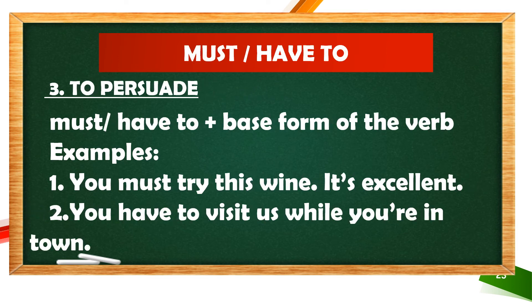We can also use 'must' and 'have to' if we would like to persuade someone about something. Example: 'You must try this wine. It's excellent.' Here, you are persuading someone to try the wine because it is excellent. Number two: 'You have to visit us while you are in town.' You are encouraging someone to visit you. That is why you use the modals 'must' and 'have to'.